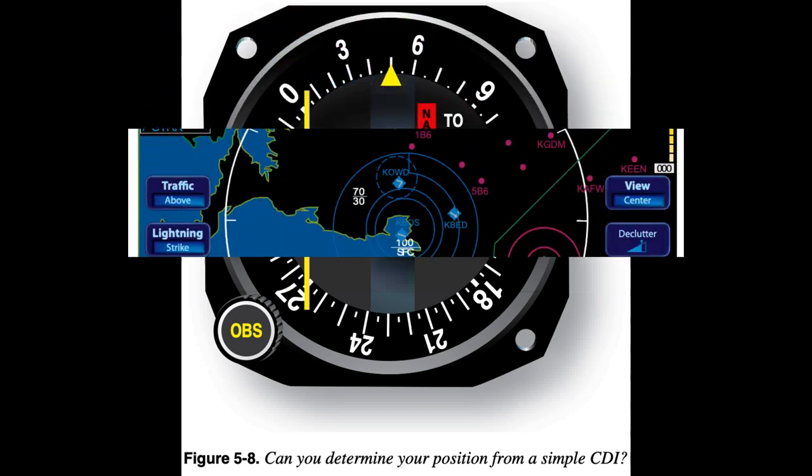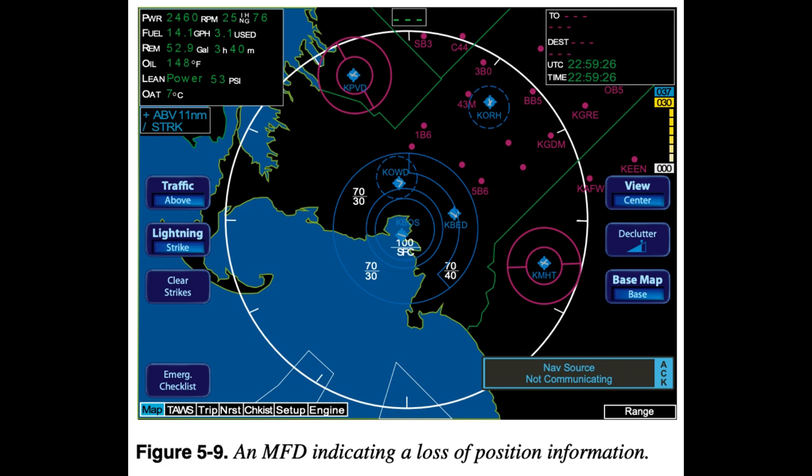Failure Indications. Failure indications on the Moving Map can be quite subtle. The MFD in Figure 5-9 reflects a loss of position information, indicated by the removal of the aircraft symbol, compass labels, and other subtle differences. Be familiar with the failure indications specific to your equipment. Common error: using the Moving Map as a primary navigation instrument. The rich detail offered by the Moving Map display invites you to use the display as a primary navigation instrument, but you need to resist this temptation. The Moving Map display is designed to provide supplemental navigation information, but is not approved as a substitute for primary navigation instruments.